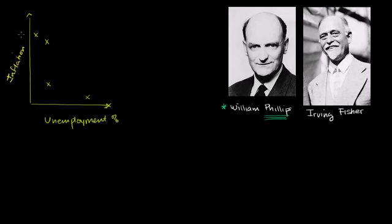And I could just keep plotting some points over here. You could even have deflation. And what he saw is there's a correlation here, that there's an inverse relationship, that if you were to try to fit a curve to these points, and you could have more points here, and I'm just picking them at random, you could fit a curve that looks something like this.